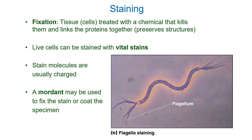If we want to study a living cell to understand its function, we can still use stains, but we have to use something called a vital stain. Vitality refers to life — these are stains that don't kill the cell, and we don't fix the cell either. Unfortunately, these stains tend not to work nearly as well, and they do tend to kill the cell eventually.